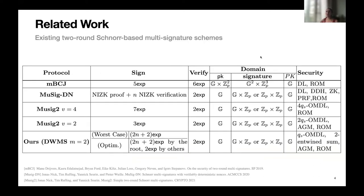These are the existing two-round Schnorr-based multi-signature schemes. There have been many before, but it has been shown by Drijvers et al. that the existing ones are not secure, by demonstrating an attack called the K-sum attack. This attack is based on adversarial choice of randomness. After that, Drijvers et al. proposed a new scheme called MPCJ. It is Schnorr-based, but the form of the signature is not the same as Schnorr, so verification is less efficient, and the public key size and signature size are bigger than in Schnorr.